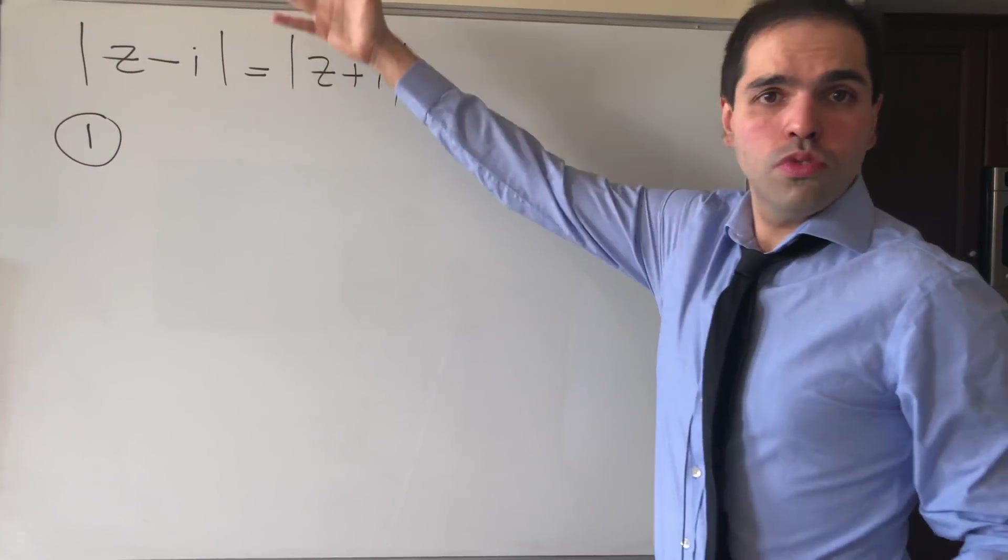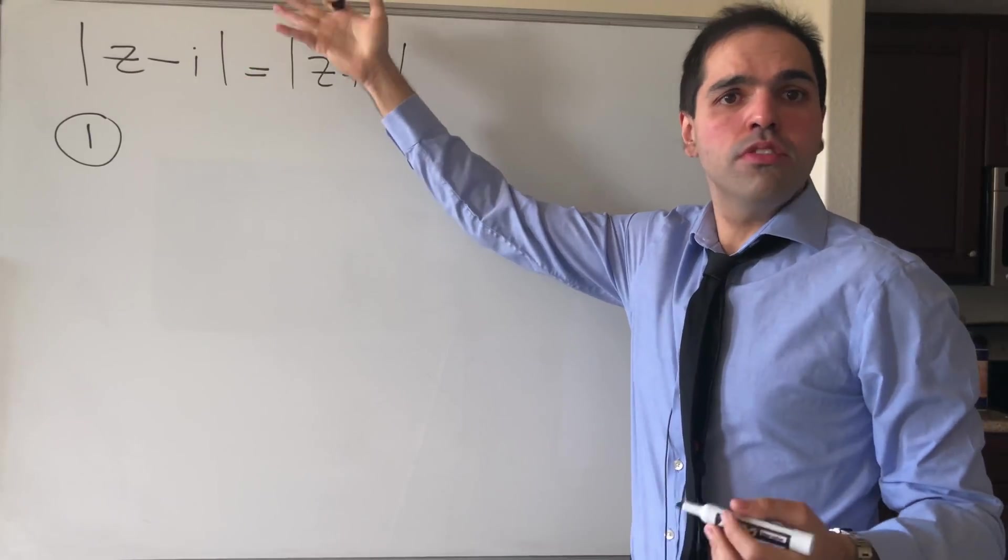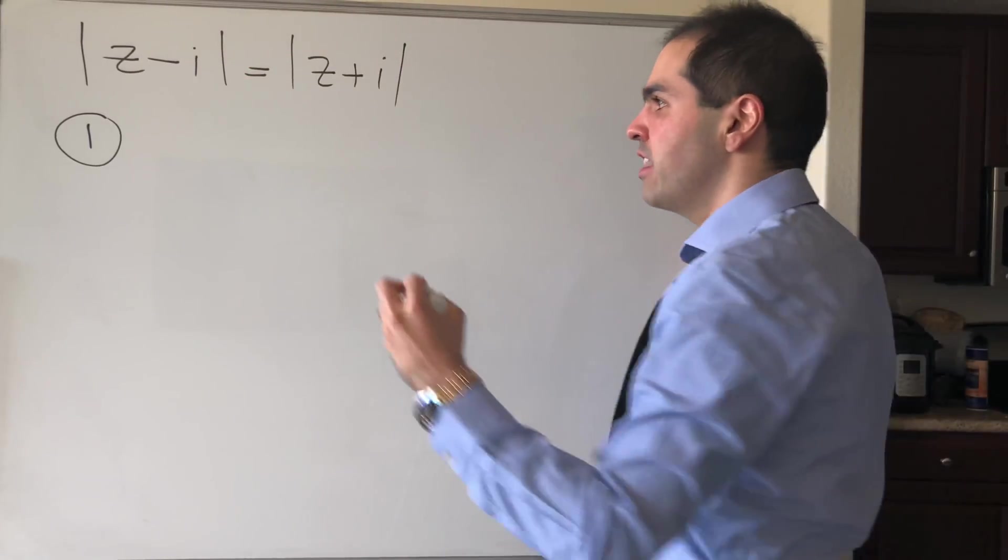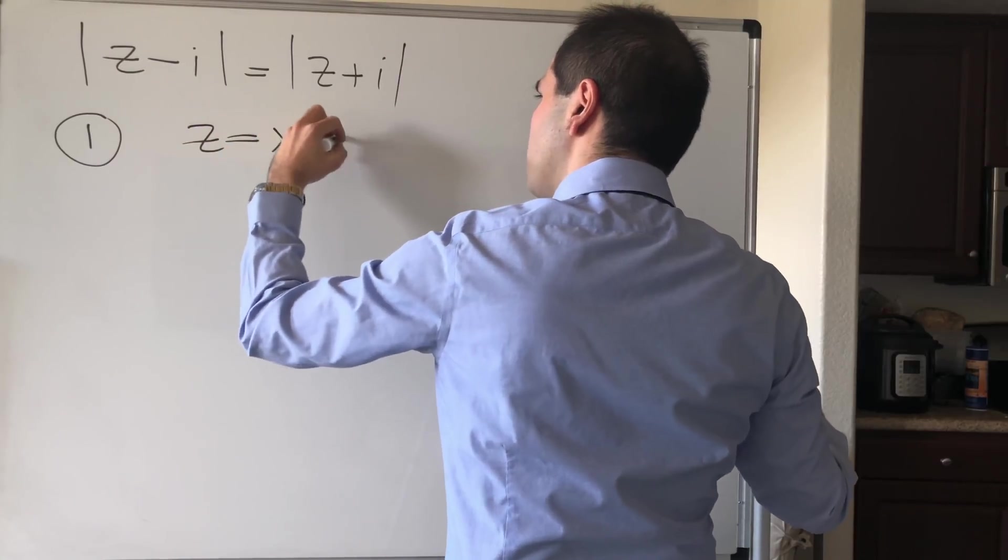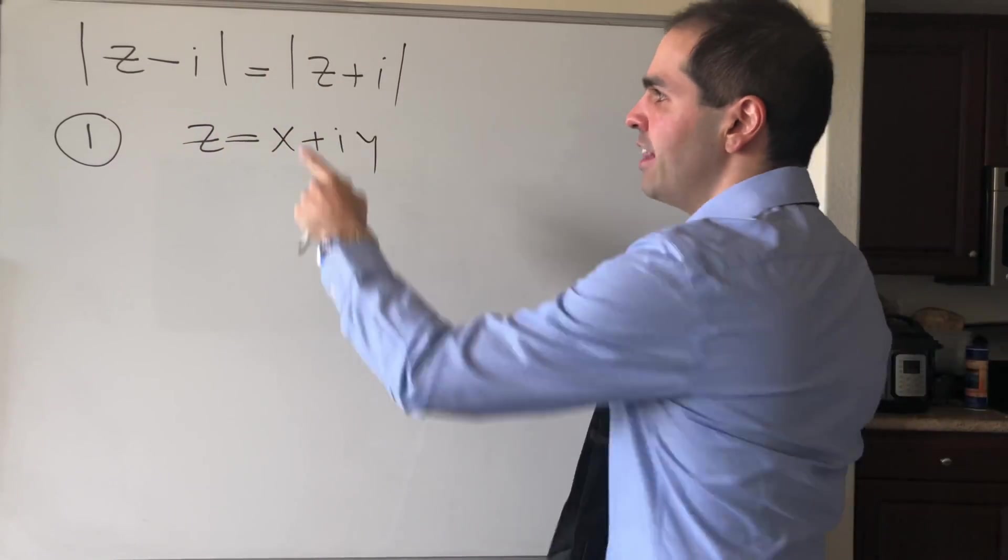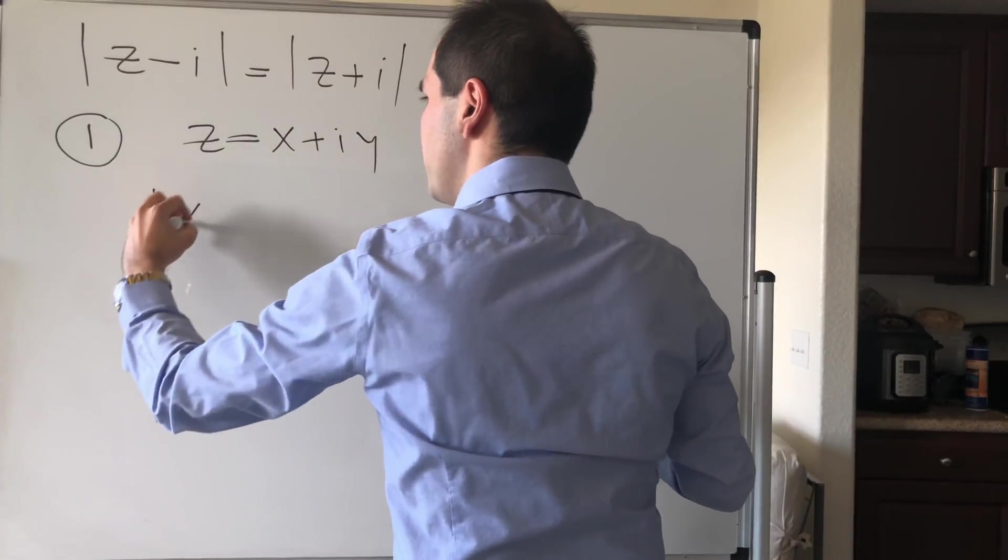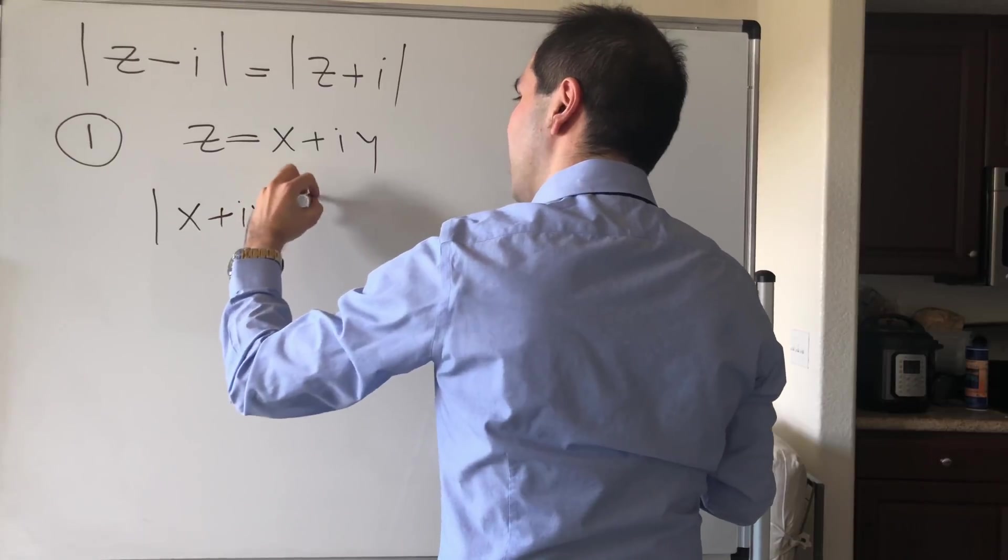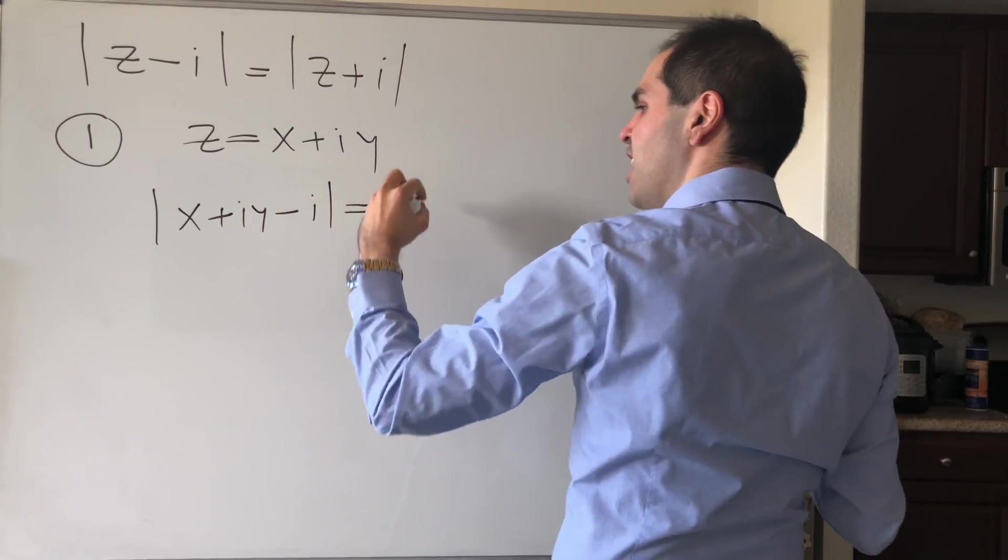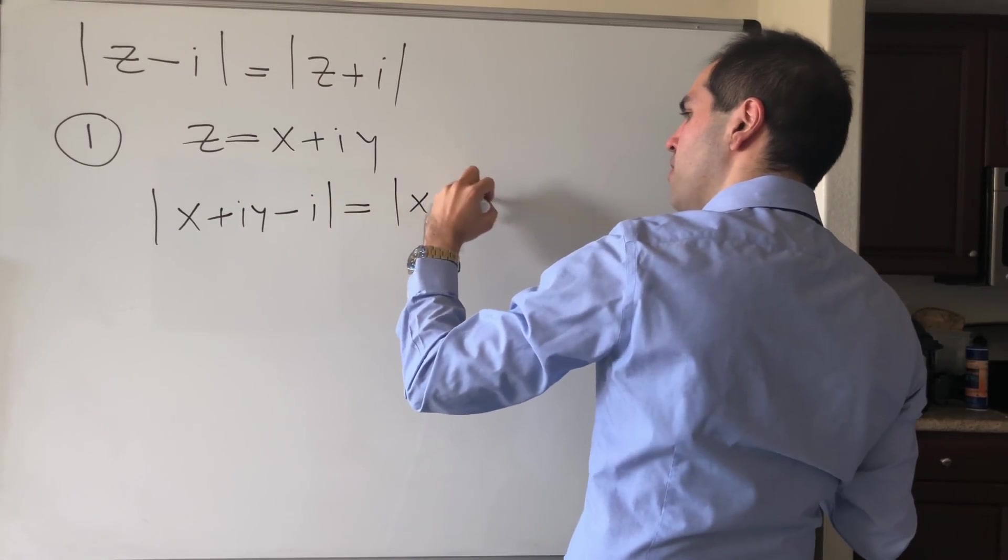Okay, so suppose, since z is a complex number, let's write this in terms of real and imaginary parts. So suppose z equals x plus iy, and then what do we get? Well, the left-hand side becomes x plus iy minus i, and then the right-hand side becomes x plus iy plus i.